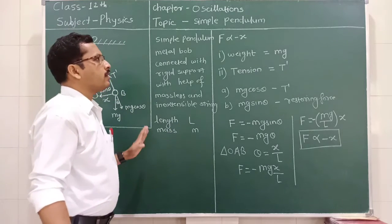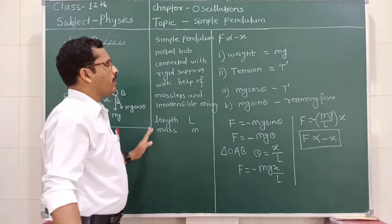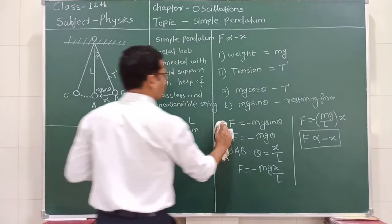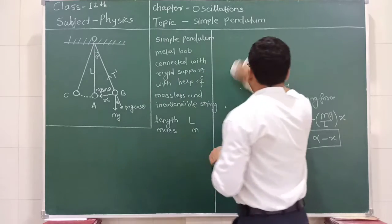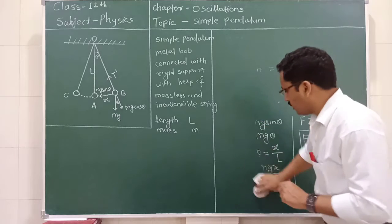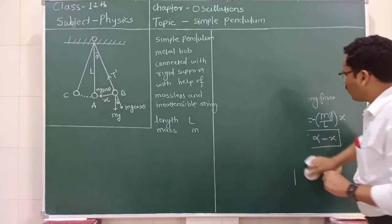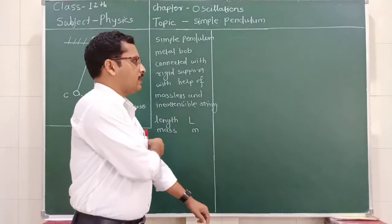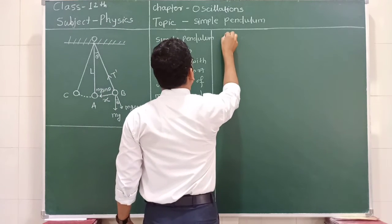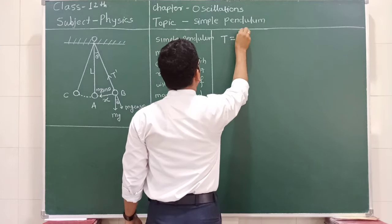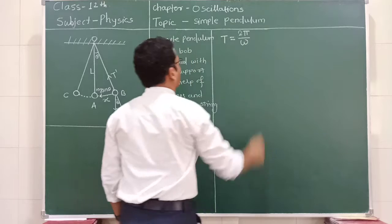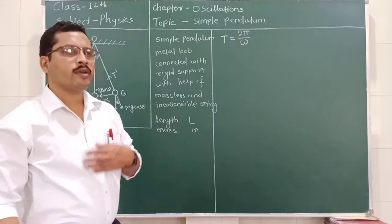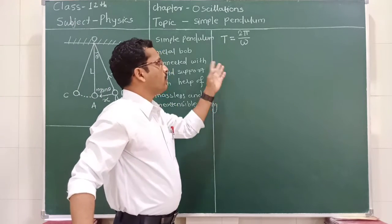Now we are going to derive a relation for the time period of the simple pendulum. The time period is the time required to complete one oscillation. We start from the equation: T = 2π / ω, where ω is the angular velocity or angular frequency. We need to calculate the value of ω.